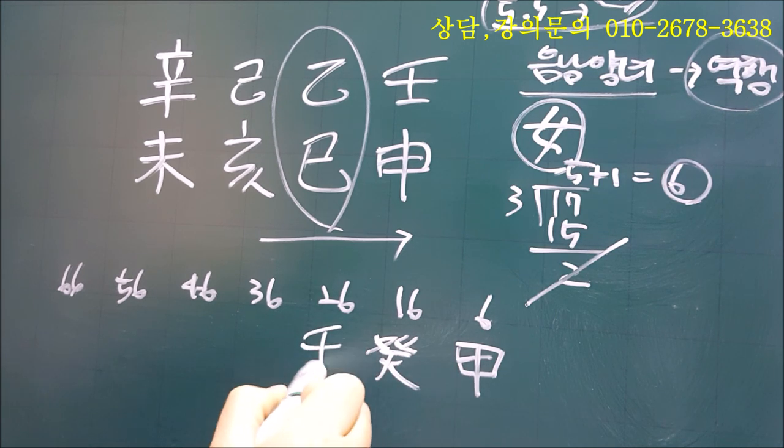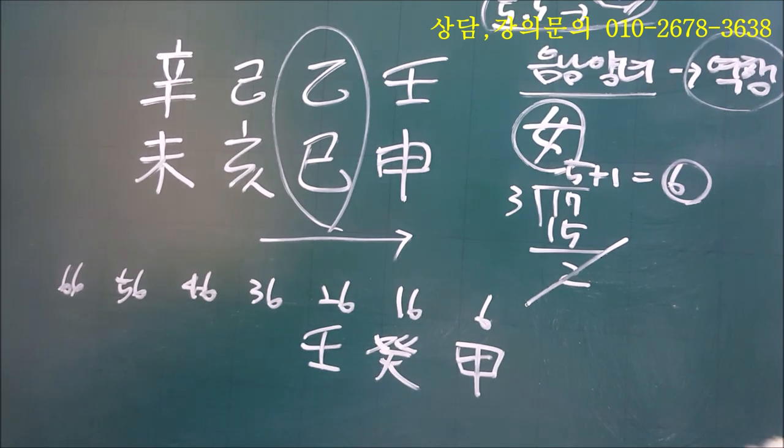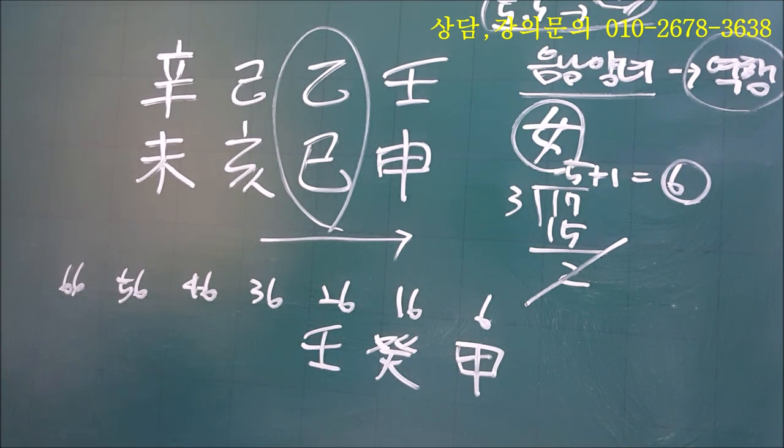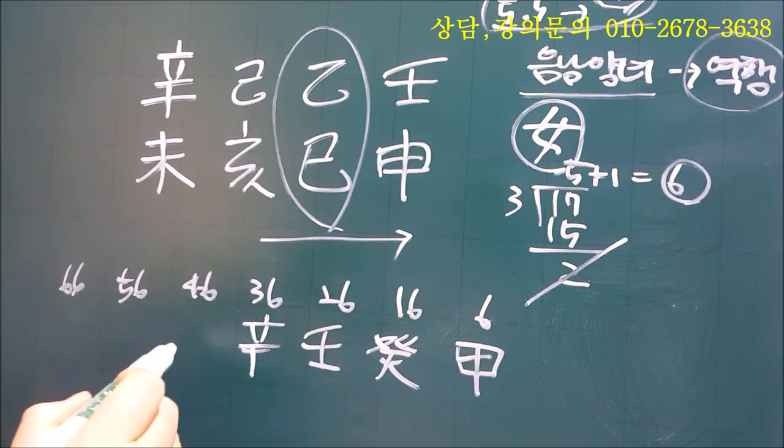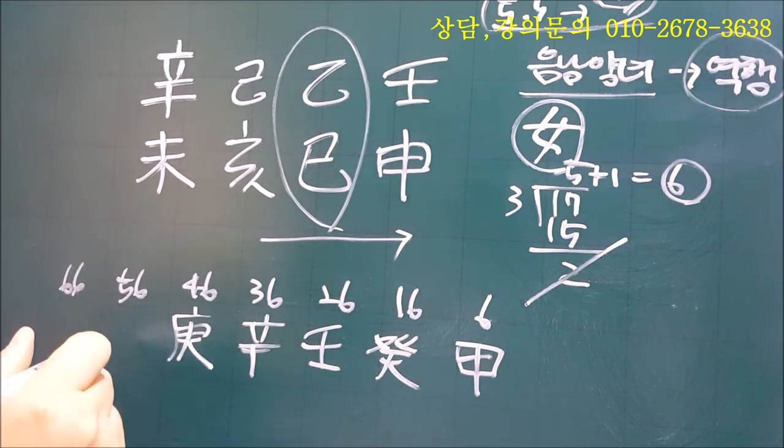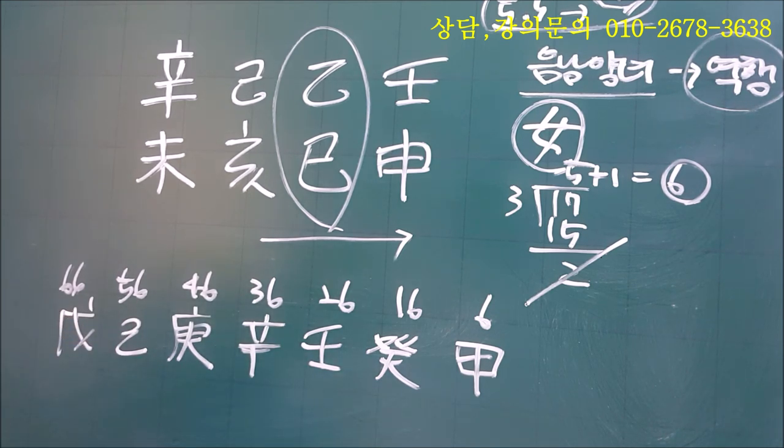이렇게 쓰는 거예요. 갑 앞에는 개가 있었을 것이고 갑을병정, 무신, 무기, 경신, 임계 갑 그러니까 거꾸로 적는 거라고 했잖아요. 이렇게 적어 나가는 거죠. 대운이 맞죠? 경신, 임계 그럼 앞에는 무기가 있었을 것이고 이렇게 기둥을 세울 수가 있고요.